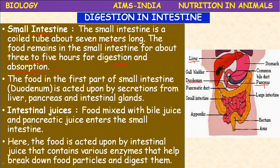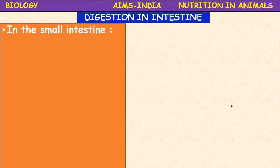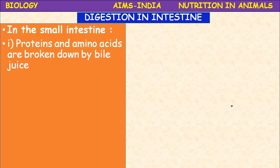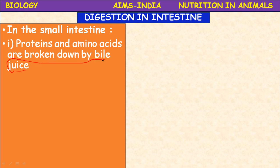The chemical process of digestion takes place in the presence of the enzymes present in the digestive juices. In the small intestine, proteins are broken down into amino acids. It is important to note that bile juice helps in the emulsification of fats — not proteins. So bile juice helps in emulsification of fats.